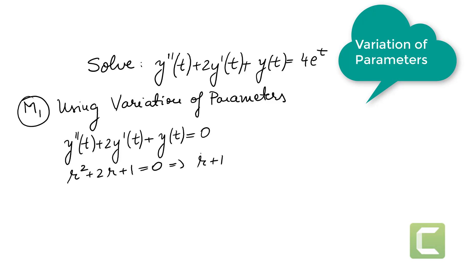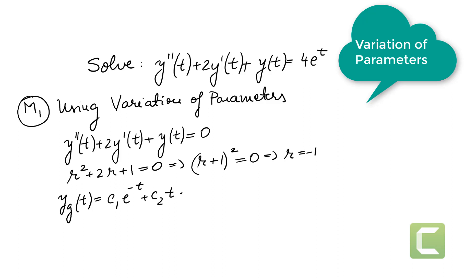We can solve this using the quadratic formula or by recognizing the perfect square. We get r = -1, a repeated solution. When we have a repeated root, the general solution is c1·e^(-t) + c2·t·e^(-t). We introduce the extra factor of t because of the repetition, with e^(-t) coming from r = -1.